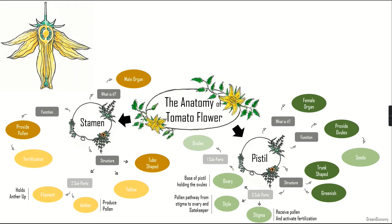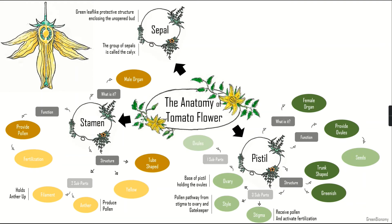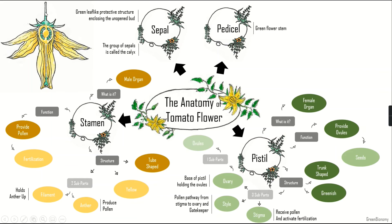Now we'll review the non-reproductive parts of the flower. The first is the sepal — a green, leaf-like protective structure enclosing the unopened bud. When a flower is not open yet, you can see green leaf-like structures around it that protect the flower inside. Together, multiple sepals form the calyx, which protects the flower. The pedicel is the green flower stem — simply the stem that holds the flower to the plant.